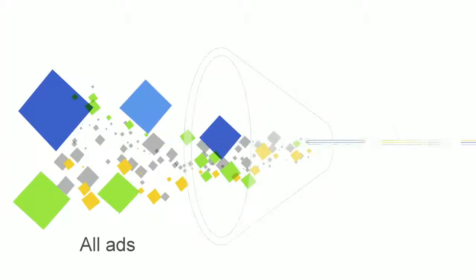As an AdSense publisher, you can place AdSense code onto your pages that will fetch ads from Google. We have ads from a large pool of advertisers, and so our system first narrows down the number of ads to see which ones are relevant to the content on your pages.